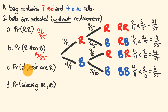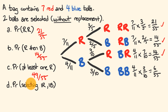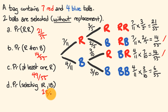For at least one red, we add the three outcomes containing red: 21 + 14 + 14 = 49, giving 49/55. Or equivalently, 55 − 6 = 49, so 49/55. For one red and one blue in any order: 14 + 14 = 28, giving 28/55.